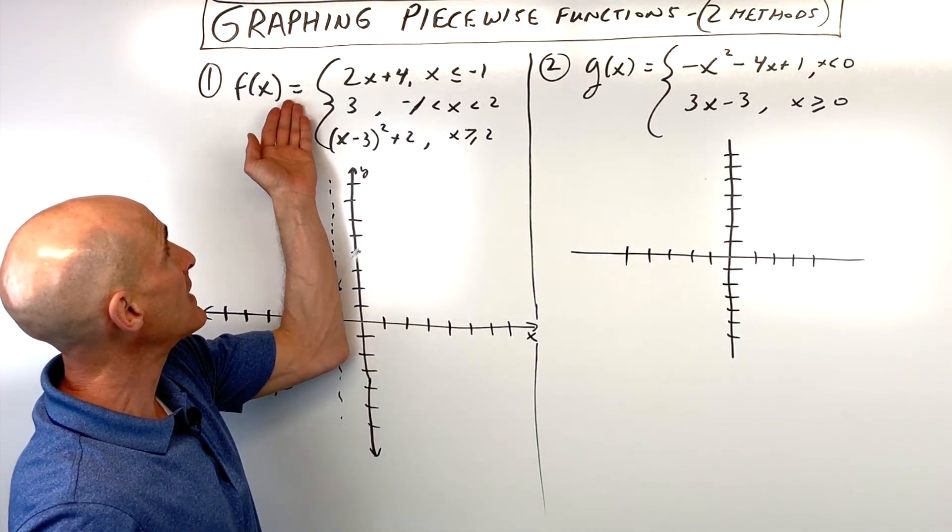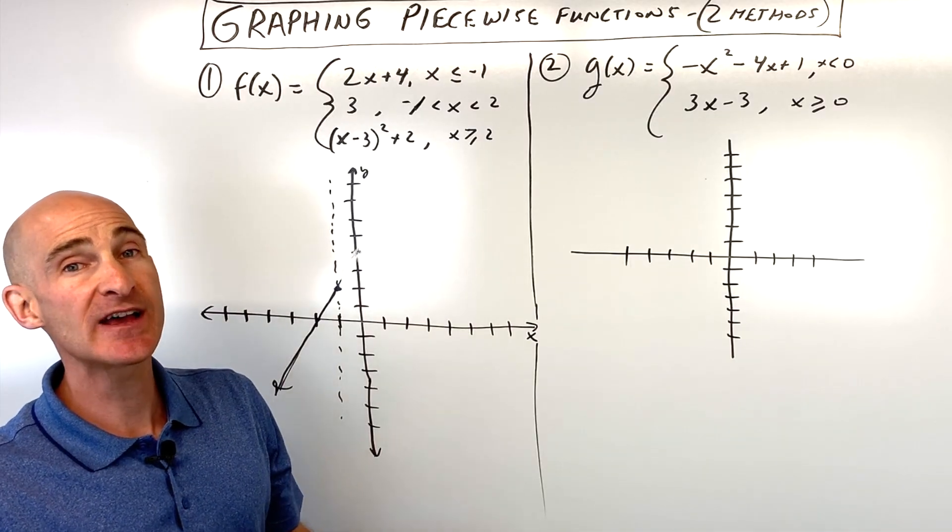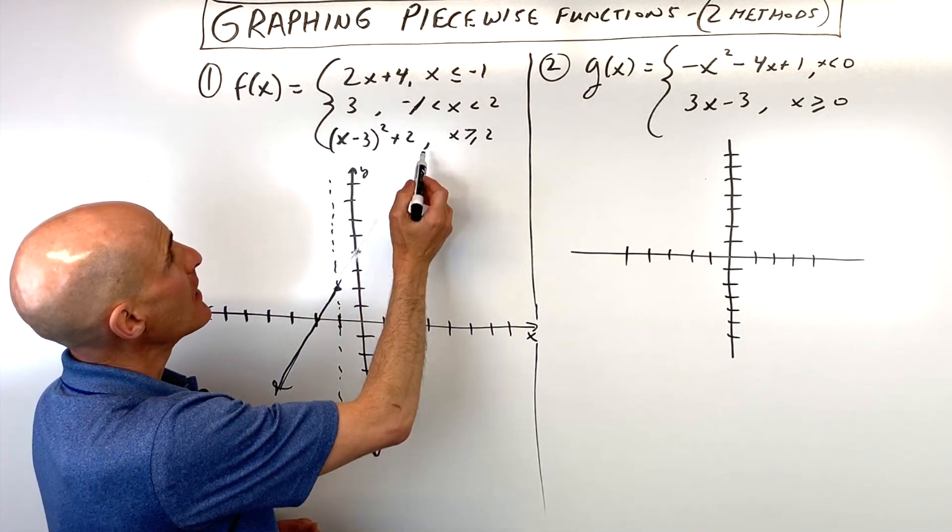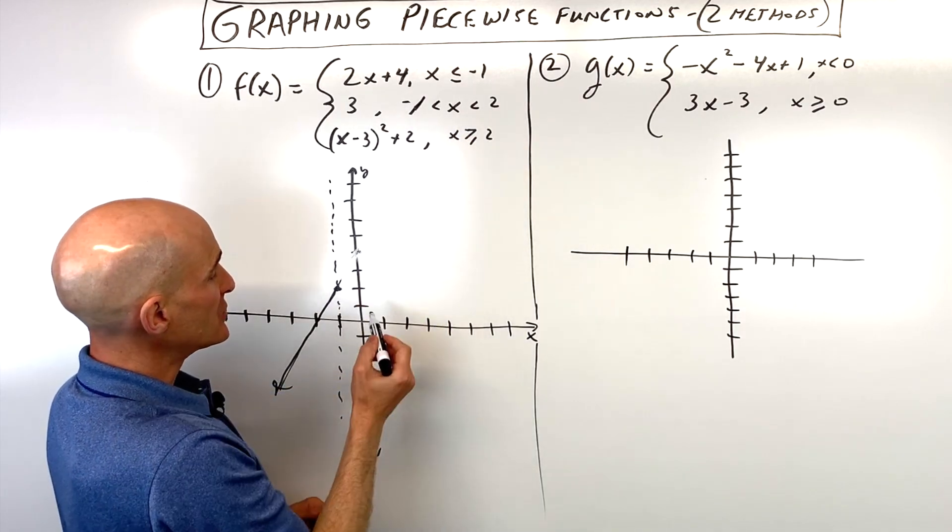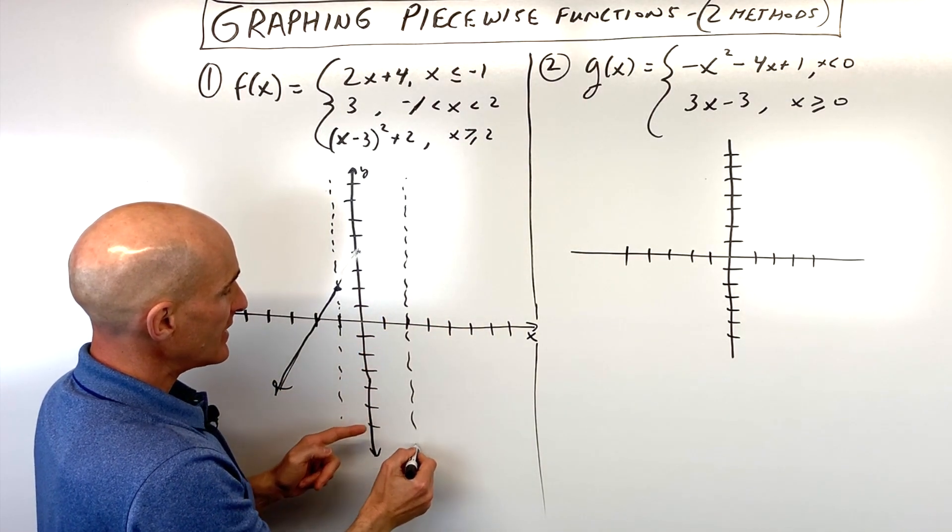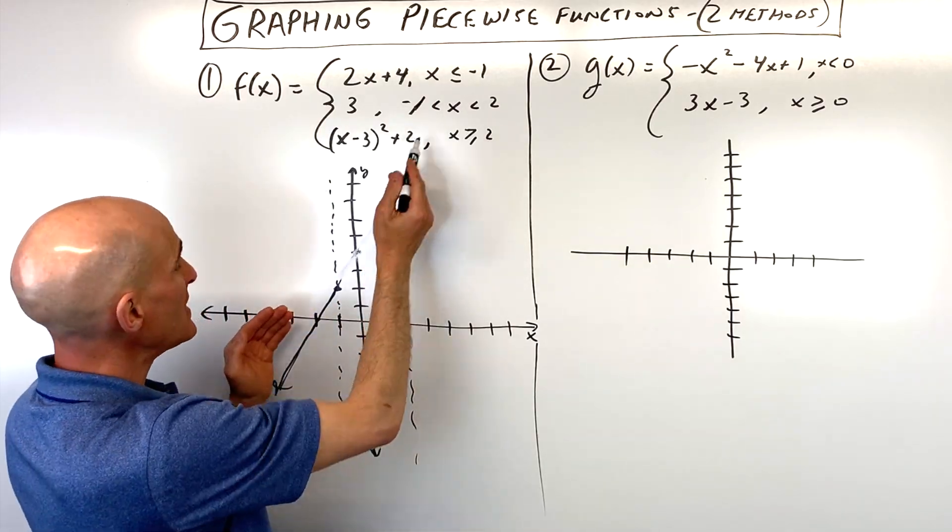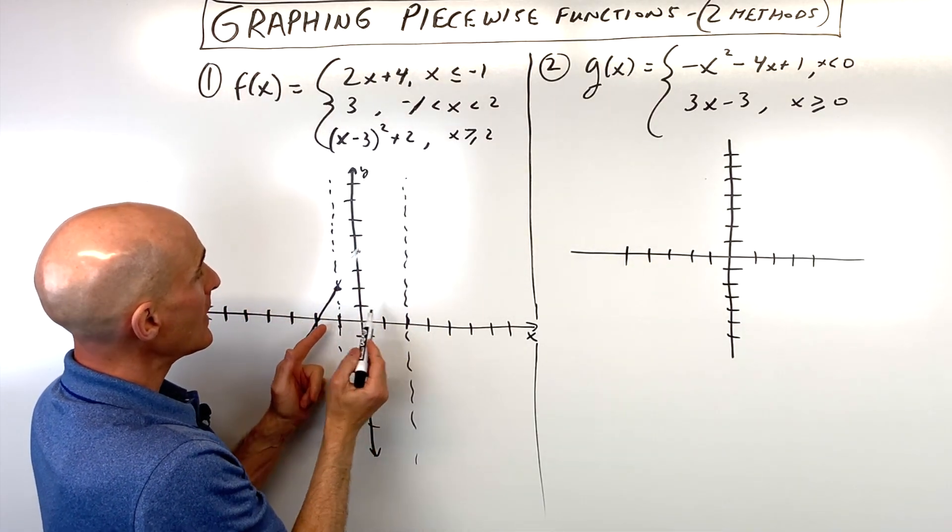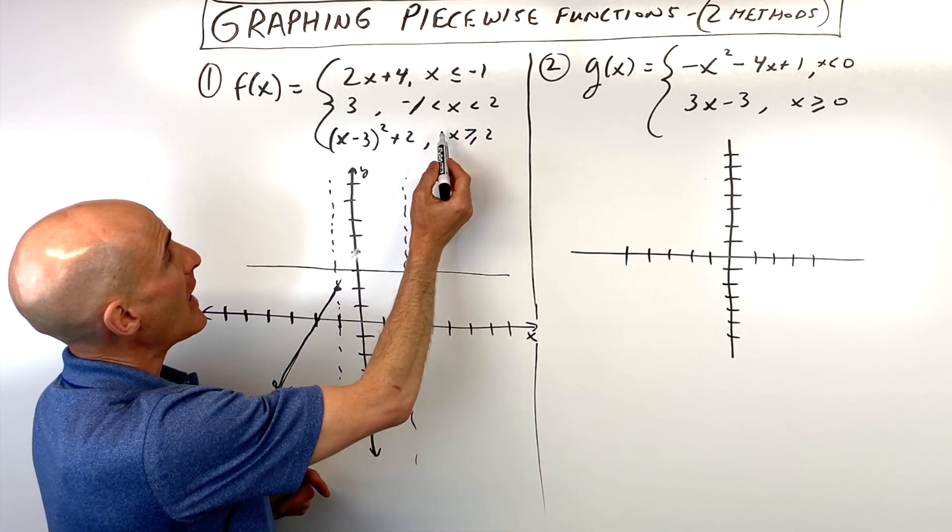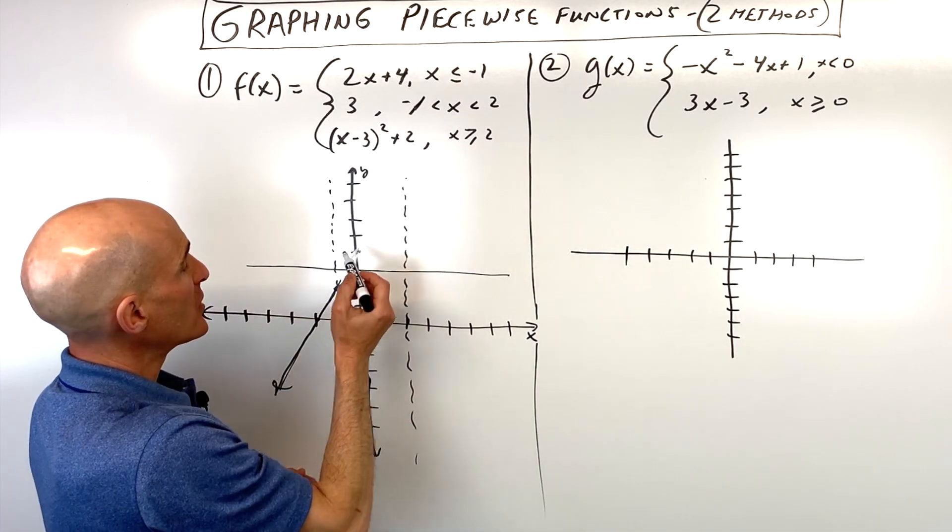Okay, so now the next part, y equals 3. Now y equals lines, remember, these are horizontal lines. So I'm going to graph the line y equals 3, but this is in between negative 1 and 2. So if we go over here to x equals 2, I'm just going to draw like a light dotted line. We're going to be in between negative 1 and 2, and it's the line y equals 3. So here's y equals 3, but we only want to be in between negative 1 and 2.